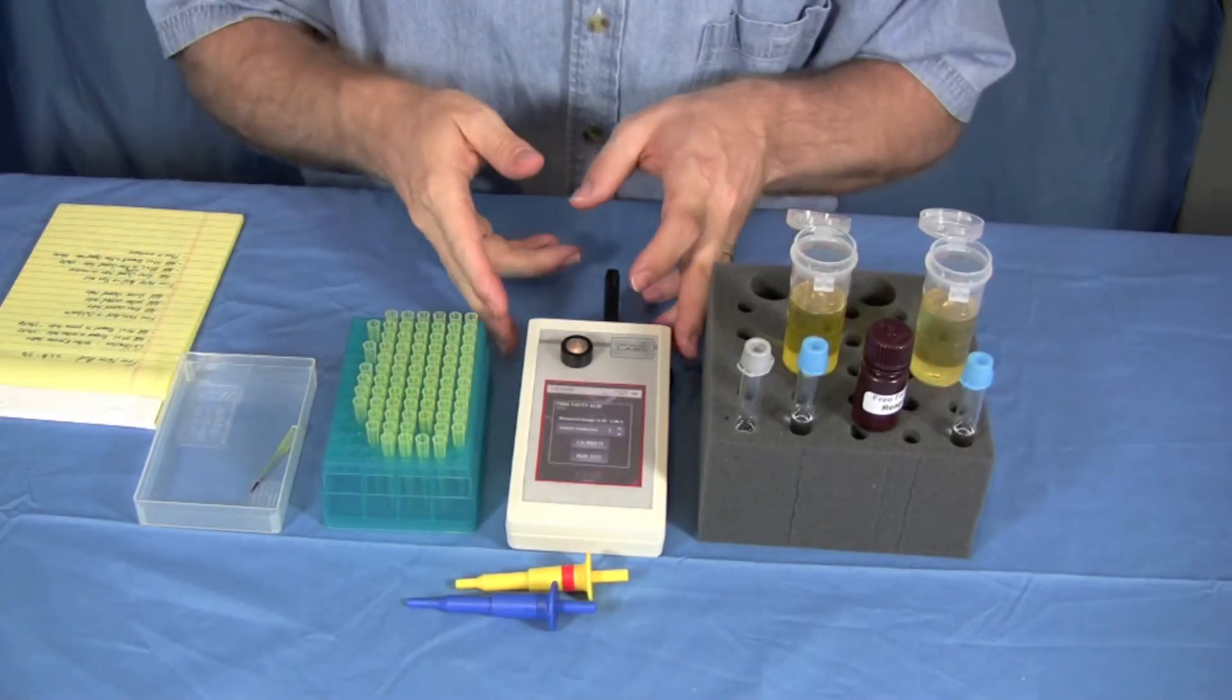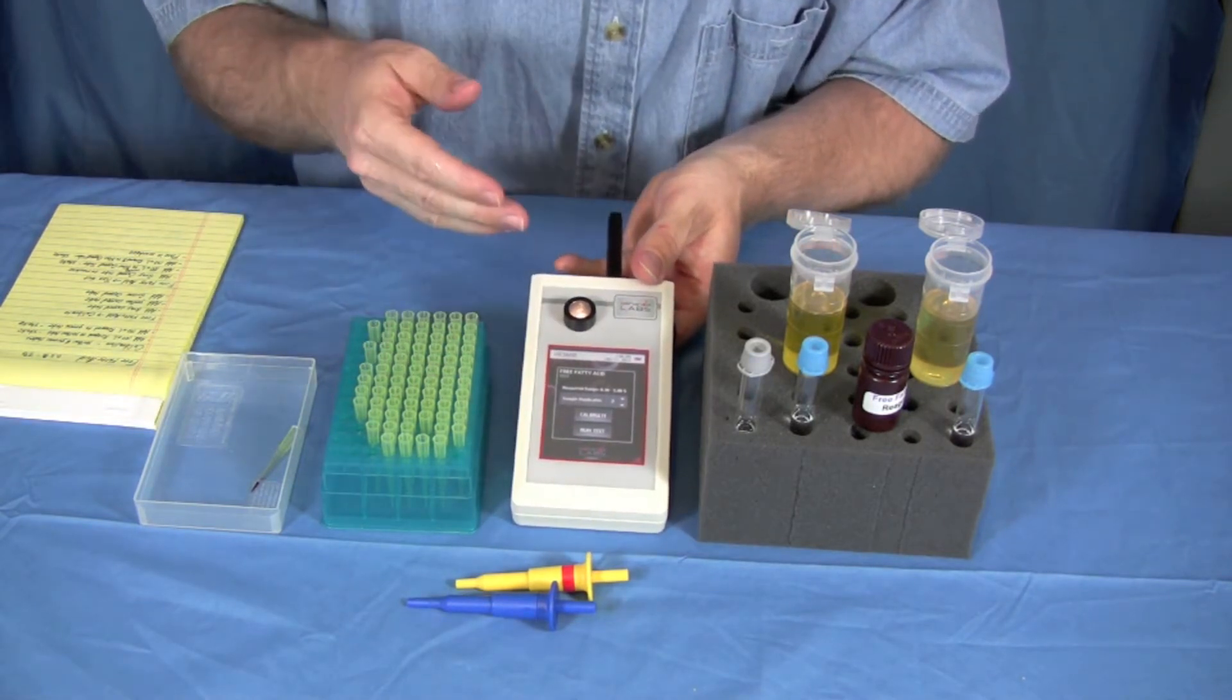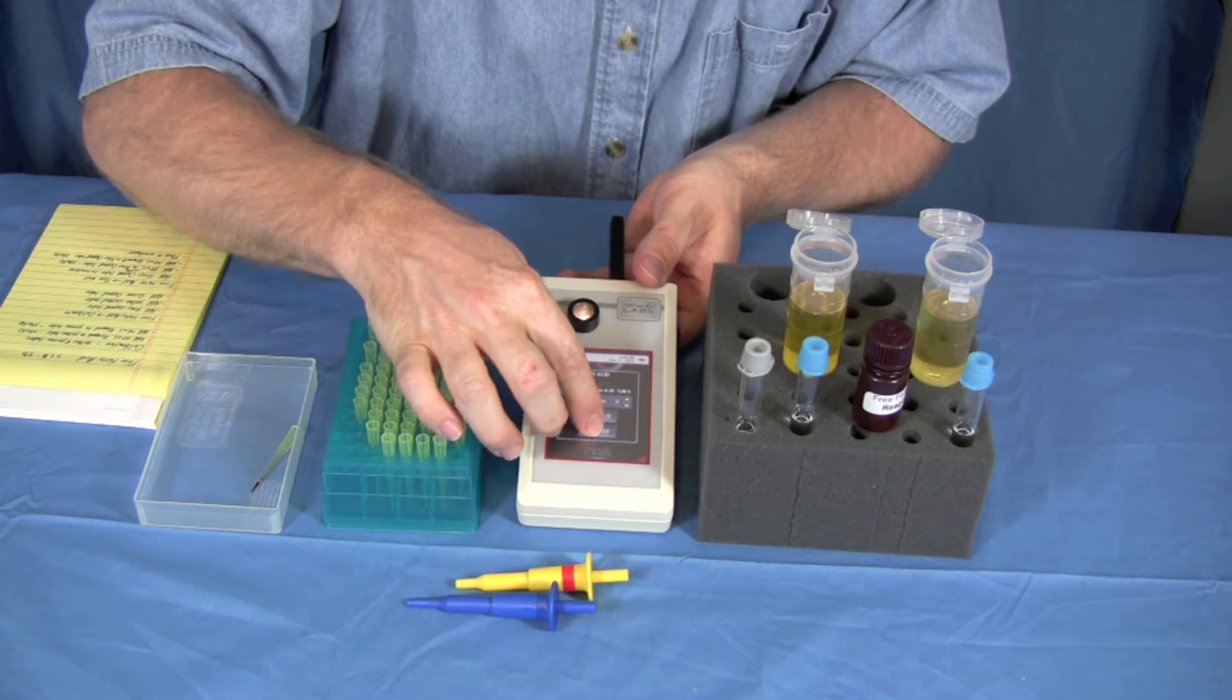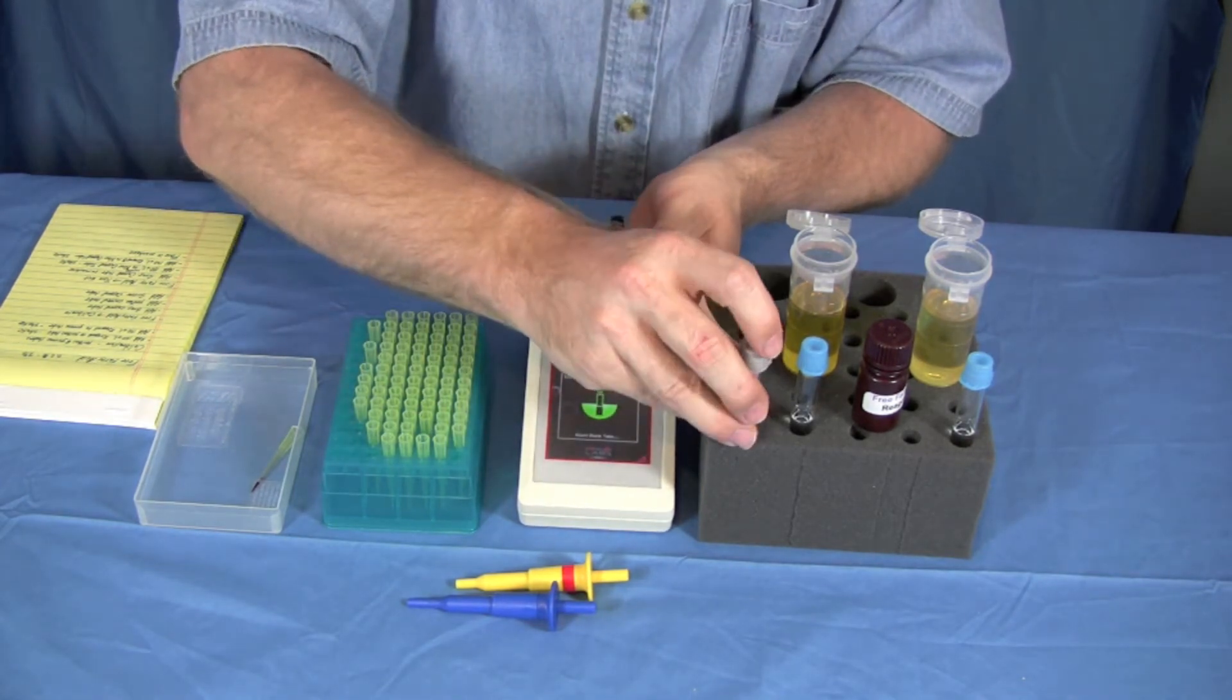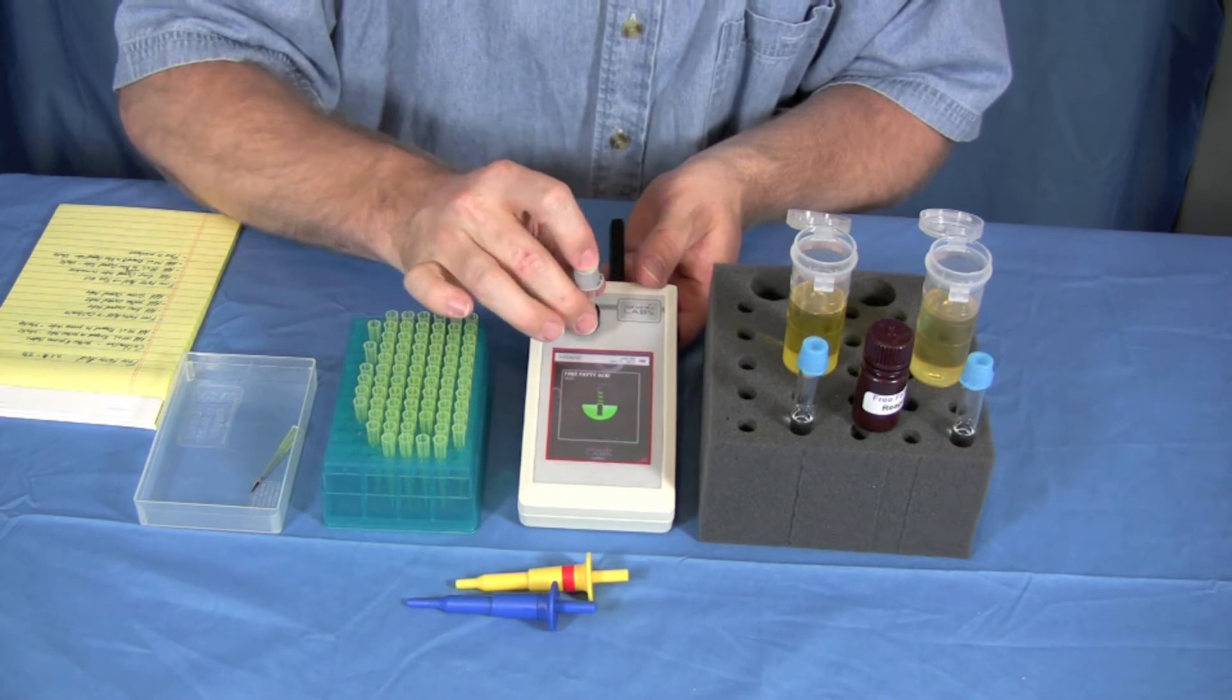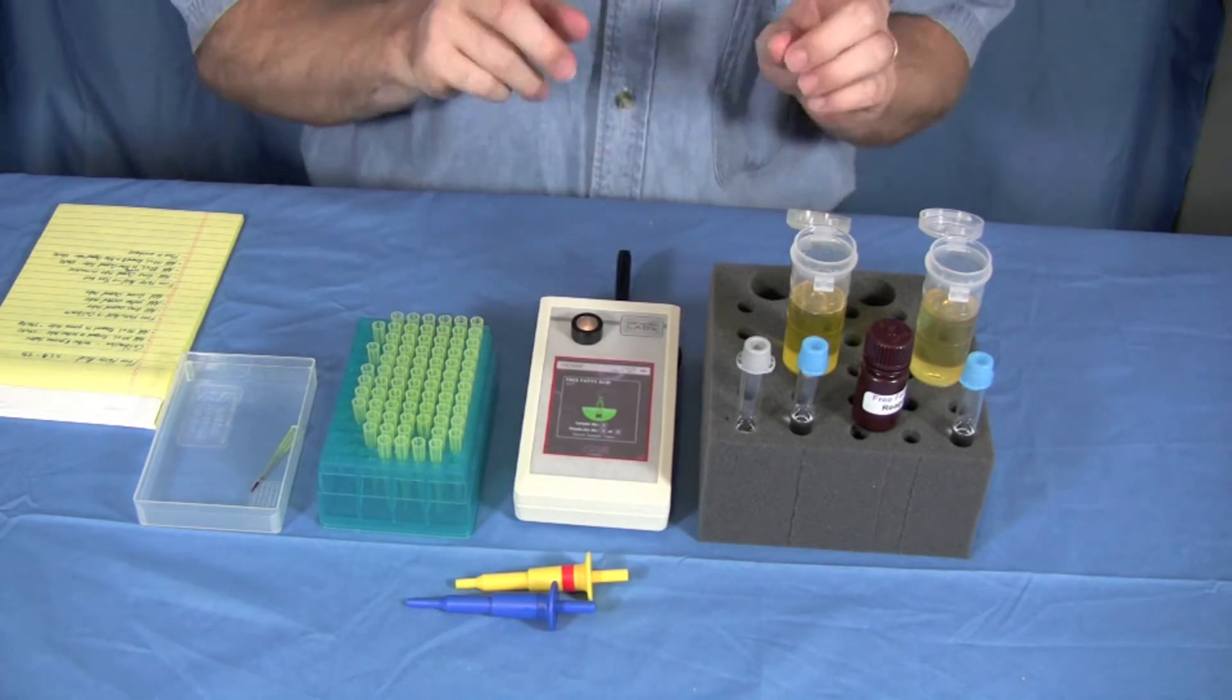To start a test it's real simple. You walk up to the machine, get it into the free fatty acid mode. We've already calibrated it so now all we do is choose run test. It asks us to enter the blank so we take the blank, put it in, pull it out. Now we're ready to do our test.